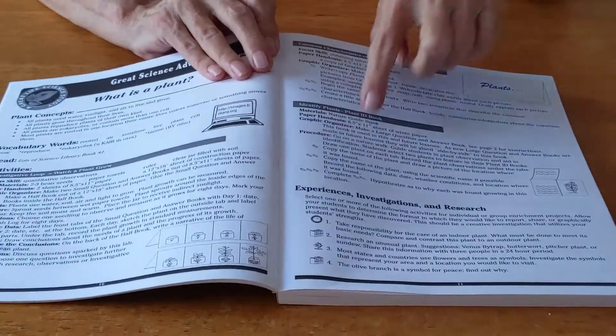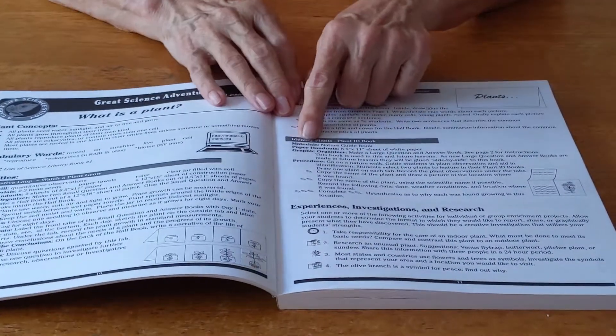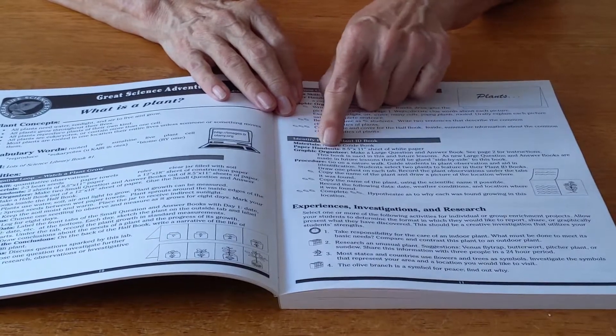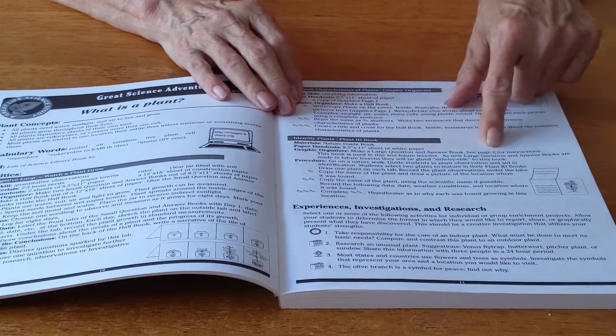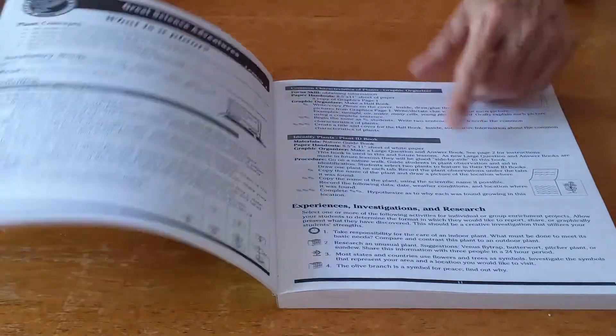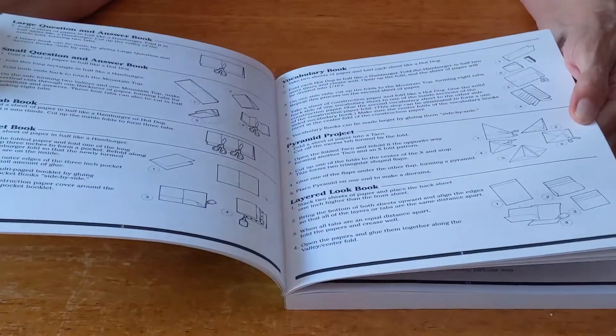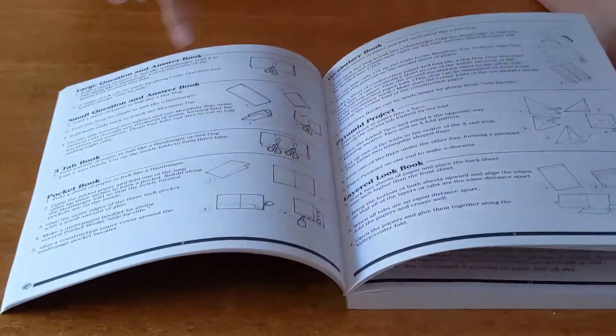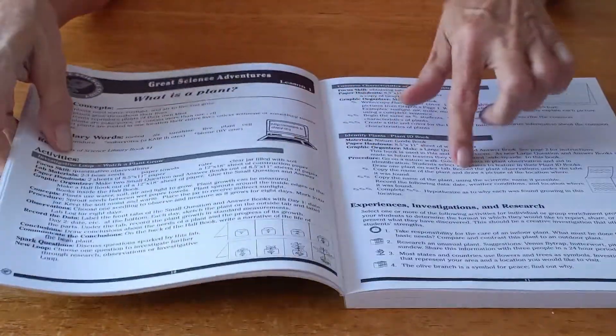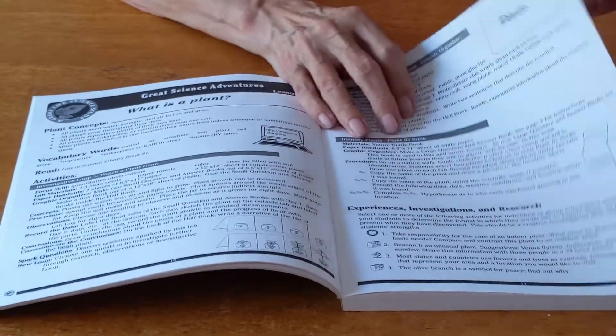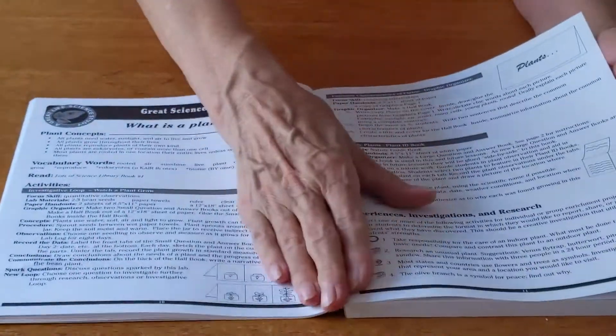This is another graphic organizer. Again it tells you the materials you need, the paper, and which organizer to use. It's on page two. So you can turn to page two and you can find the organizer that you need for this activity. That is the end of one lesson.